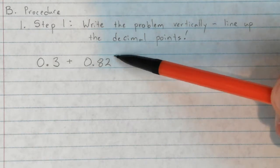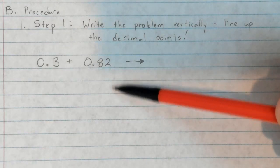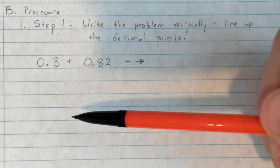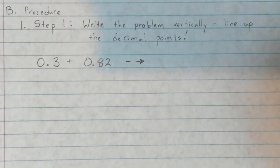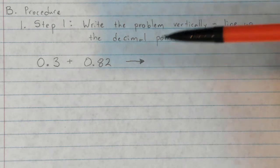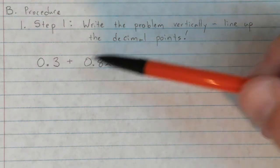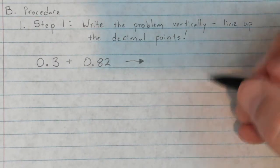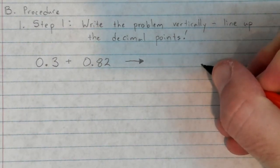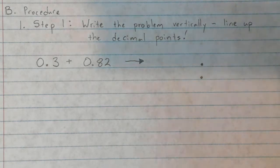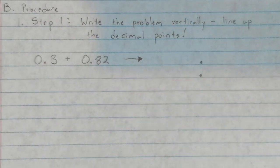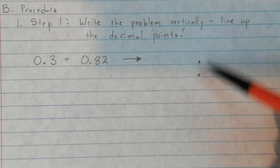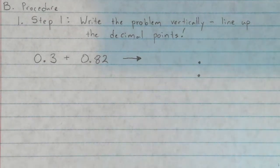You were probably taught to line everything up on the right-hand side because with whole numbers you were lining up the ones place. Decimals make it a tiny bit trickier, but not much if you focus on the decimal points. I'm going to write the decimal points in first before I do anything else, and then build the two numbers around the decimal points.